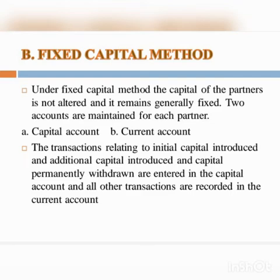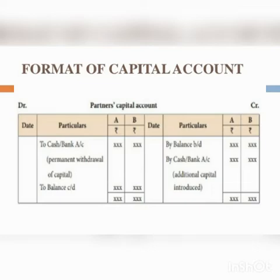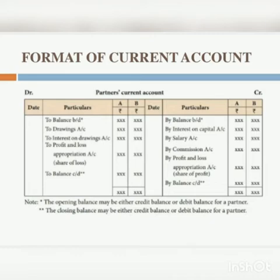The format of the capital account under the fixed capital method is as follows. In the capital account, it is credited with the capital balance and additional capital, and it is debited with permanent drawings. In the current account, it is credited with interest on capital, commission, salary, and previous year profit. It is debited with drawings, interest on drawings, or any loss.